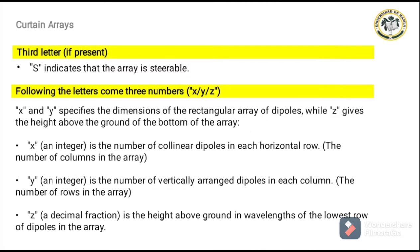The third letter S indicates that the array is steerable. The following three numbers are X, Y, Z. The dimensions of the rectangular array of dipoles are specified by X and Y, while the height above the ground of the array's bottom is specified by Z. X is the number of collinear dipoles in each horizontal row. Y denotes the number of vertically arranged dipoles in each column. Z denotes the height above ground in wavelengths of the array's lowest row of dipoles.